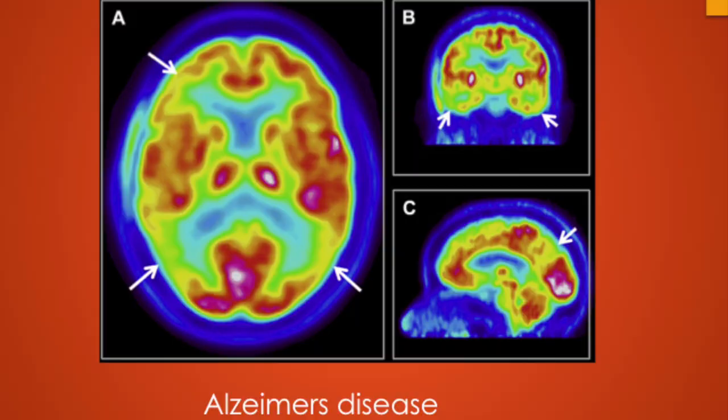Coming to Alzheimer's disease, you have hypometabolism in the parietal, medial and posterior lateral temporal cortex, and posterior cingulum. Frontal hypometabolism may also be seen as the disease progresses, bilaterally but can be unilateral. Preserved metabolism in the occipital and sensorimotor cortex, basal ganglia and cerebellum is one of the important hallmarks of Alzheimer's disease, which differentiates it from Parkinsonism.